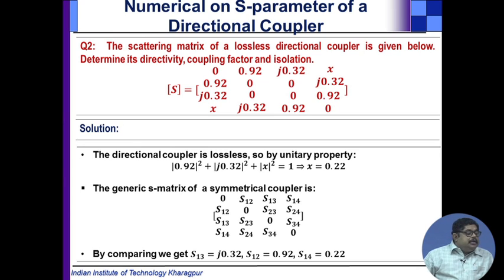The S-matrix will be unitary. We know that unitary means any column with itself conjugate will be 1. For the first column we can say 0.92 squared plus j0.32 squared plus x squared should be 1, that reveals the value of x to be 0.22.